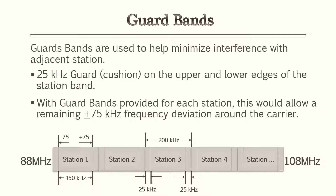With frequency modulation you will also encounter guard bands. Guard bands are used to minimize the interference within adjacent stations. The guard band is 25 kilohertz and it acts as a cushion on the lower and upper edges of each station. With guard bands provided for each station, this allows a remaining 75 plus or minus kilohertz frequency deviation around the carrier.